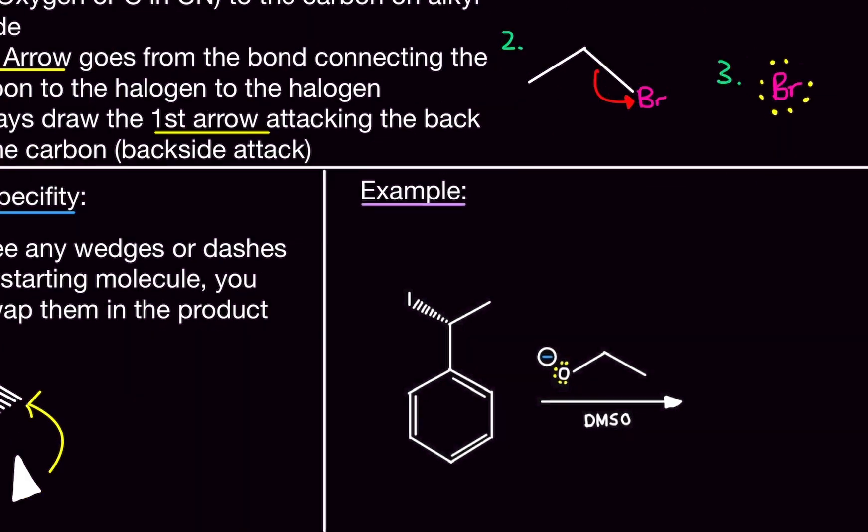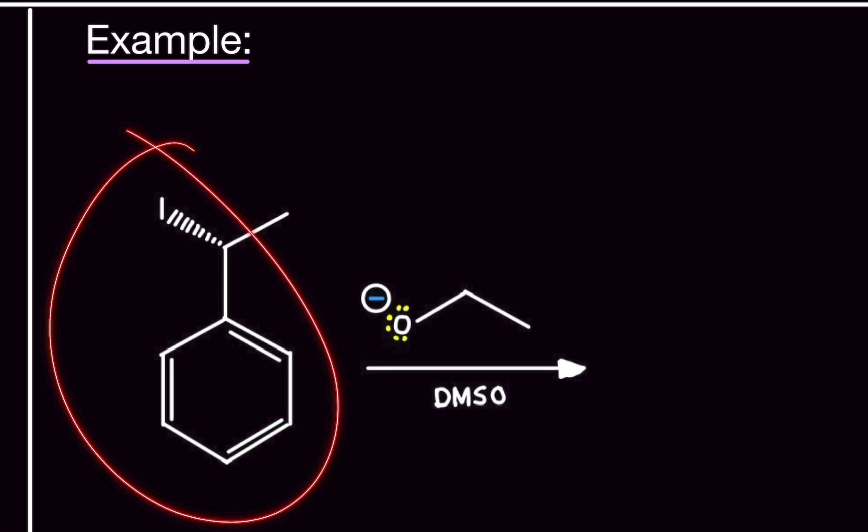So, let's do an example here. Here, we have our starting molecule and our nucleophile. So, what do we do? First, we need to identify the alkyl halide. We have the halogen here. So, that means the carbon that's directly bonded to the halogen is what we're looking at. So, this is where the attacking is going to happen on. So, we take the electrons from the oxygen, draw an arrow, and attack the backside of that carbon. And our second arrow kicks out the iodine like that. And that's all you need to do.